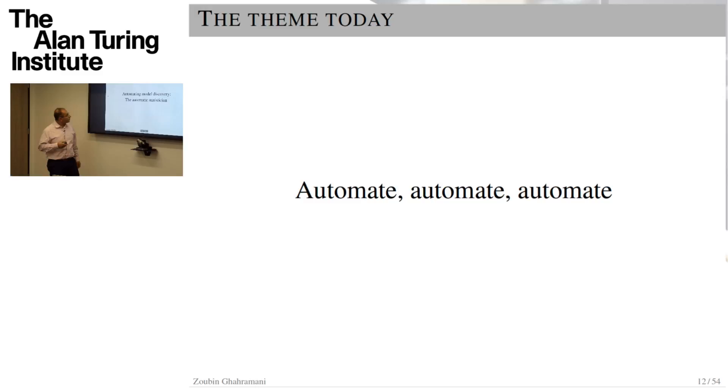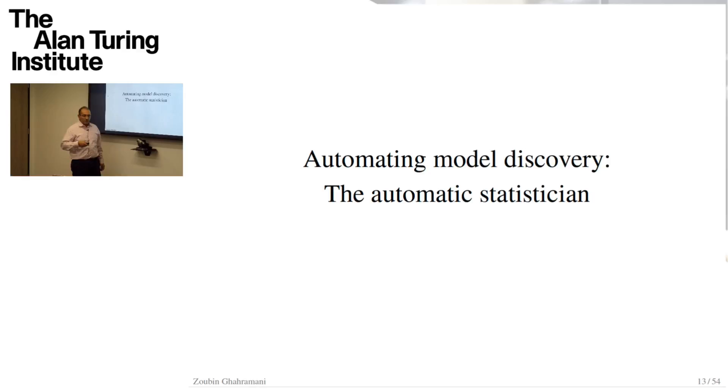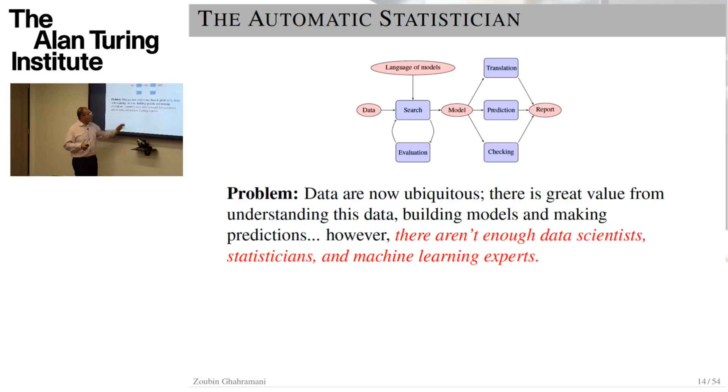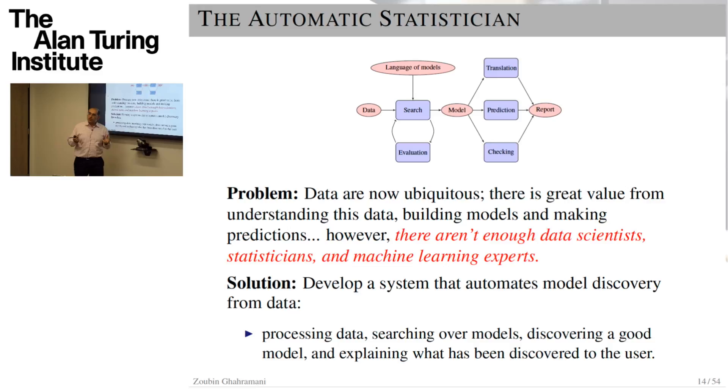So the theme I'm going to spend the rest of my time on is on automation. The first thing I'll talk about is this automatic statistician. The automatic statistician tries to address the following problem, that data are ubiquitous. We all know that. We're a data science institute, after all. But there aren't enough data scientists, machine learning experts, and statisticians out there. So what we develop is a system that automates certain aspects of model discovery from data. We're not automating all of statistics, despite the name. We're just automating a particular style of exploratory model discovery. But we want it to be really automatic, in the sense that you feed in the data and some results come out.